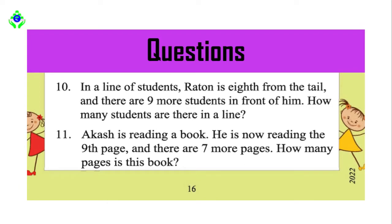In question number 10, the question is: 'In a line of students, Raton is eighth from the tail and there are nine more students in front of him. How many students are there in a line?' And in question number 11: 'Akash is reading a book. He is now reading the ninth page and there are seven more pages. How many pages are in this book?'